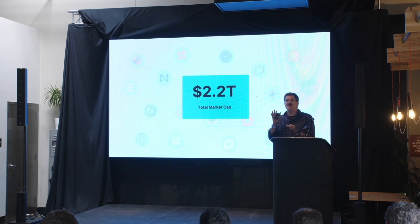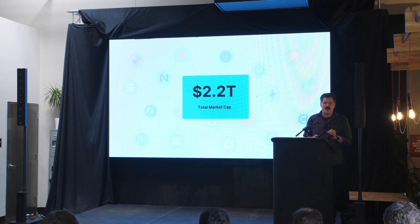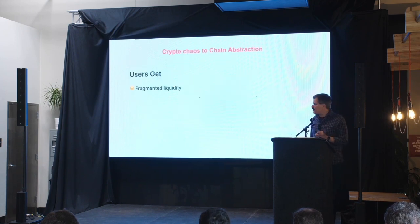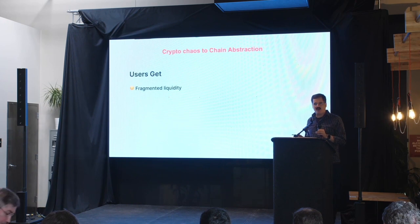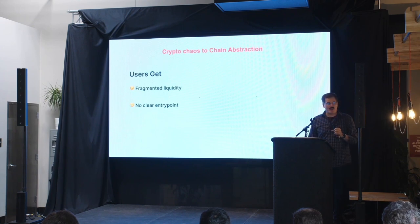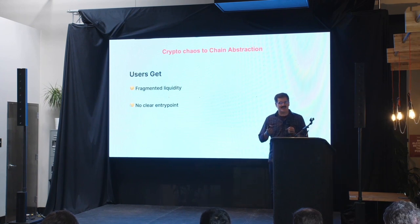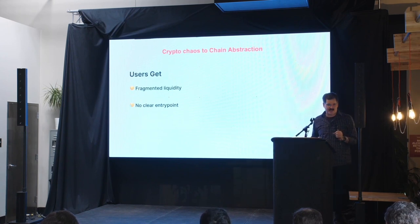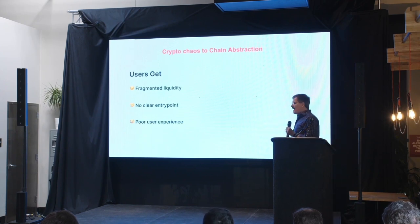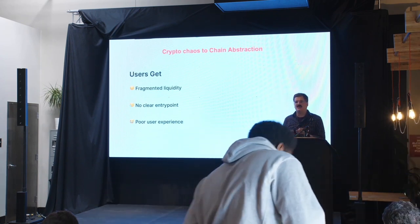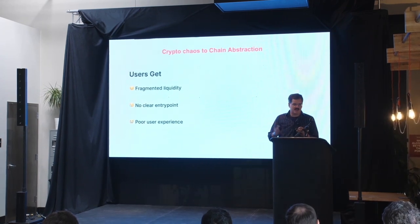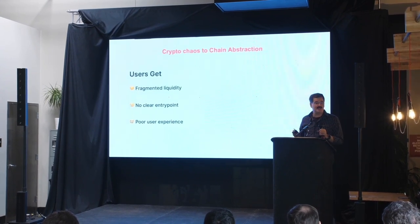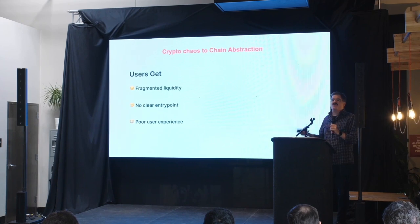That's a marvelous success, but it creates this new environment where users get fragmented liquidity — $2.2 trillion with a million here and a million there. They get no clear entry point: when a user gets 1,000 choices from 1,000 applications and 1,000 chains, the answer is they're going to go back to Web2. And they get a poor user experience — every action they might want to take requires six signatures if they want to do anything cross-chain, and requires them to do a research project to figure out how to safely participate in these systems.